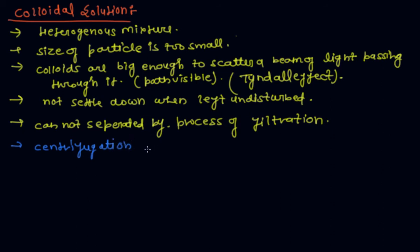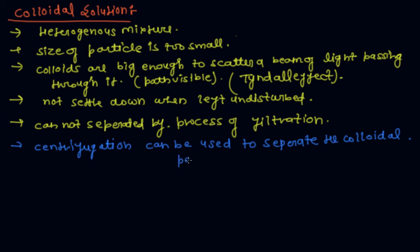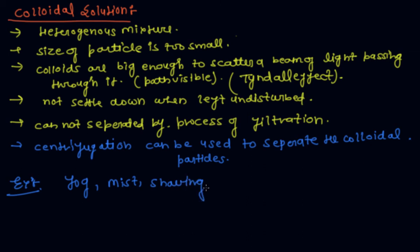A special type of process is used, which is centrifugation. Centrifugation can be used to separate the colloidal particles. Examples of colloidal solution are fog, mist, shaving cream, and jelly.